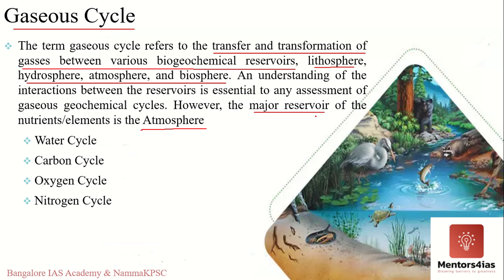An understanding of the interactions between the reservoirs is essential for the assessment of gaseous geochemical cycles. The movement of elements and compounds within each reservoir and among reservoirs are called fluxes. In a gas cycle, nutrients move through the atmosphere and the main reservoirs will be the atmosphere and the hydrosphere.